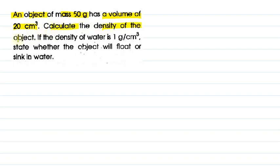Calculate the density of the object. Kya find out karna hai density. If the density of water is 1 gram per centimeter cube, water ka density kitna hai 1 gram per centimeter cube hai. State whether the object will float or sink in water. Object water me float karta hai ya sink karta hai batana hai.